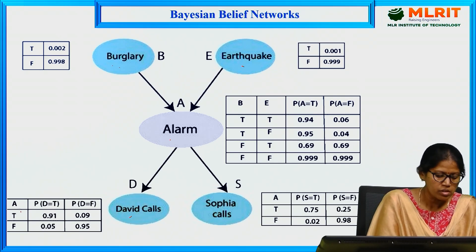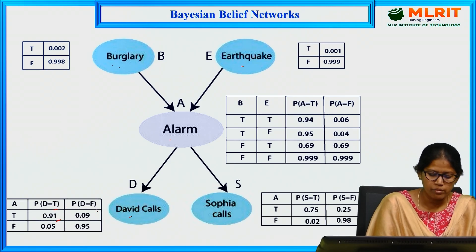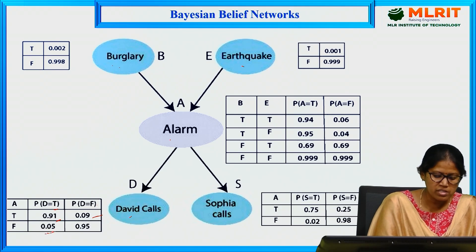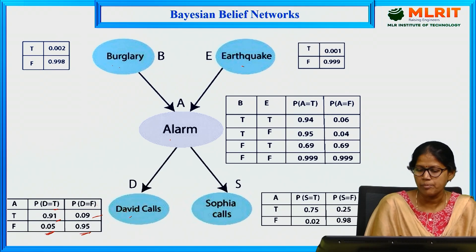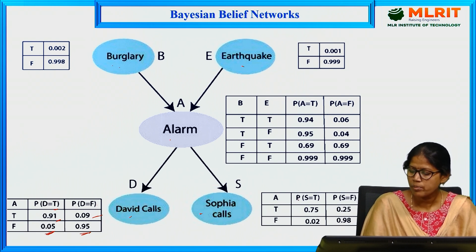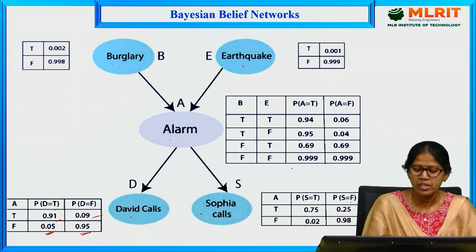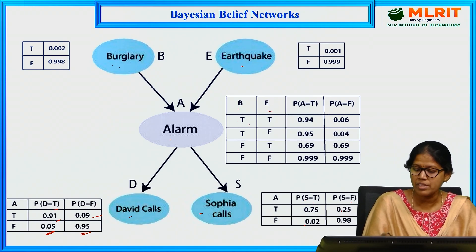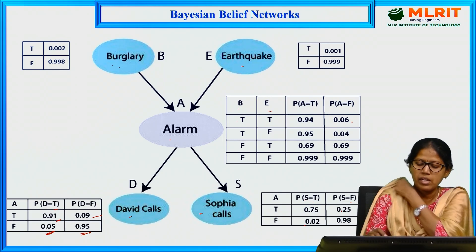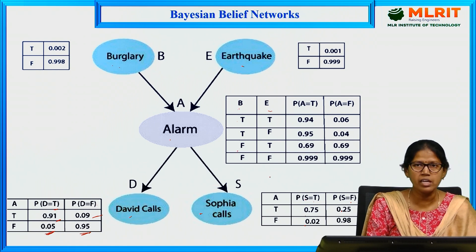For David's calls: when the alarm is true, P(D = true) is 0.91 and P(D = false) is 0.09; when alarm is false, values are 0.05 and 0.95. For Sophia's calls: when alarm is true, P(S = true) is 0.75 and P(S = false) is 0.25; when alarm is false, P(S = true) is 0.02 and P(S = false) is 0.98. For the alarm node with burglary and earthquake as parents: when both are true, P(A = true) is 0.94 and P(A = false) is 0.06, with other combinations having their respective values.